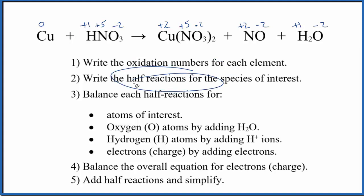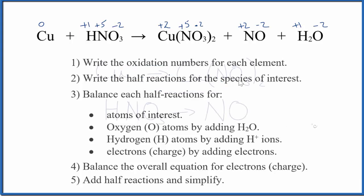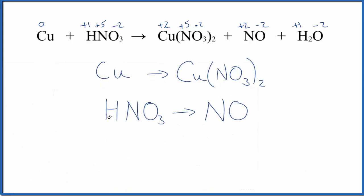From there, we can write the half-reactions. For the copper, you go from zero to two plus. This is a bigger number, so it's been oxidized. You also see that oxygens are added to this side. The nitrogen goes from plus five to plus two. This is a smaller number, so it's been reduced. There are also fewer oxygen atoms.